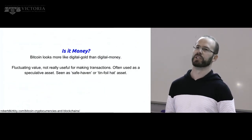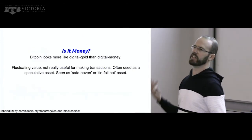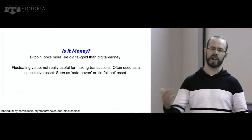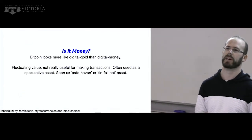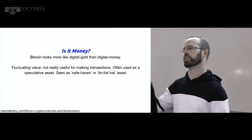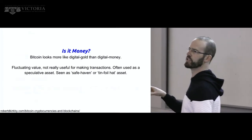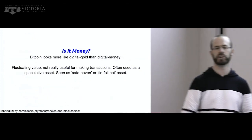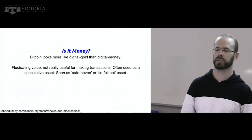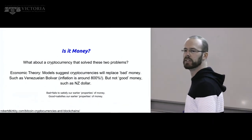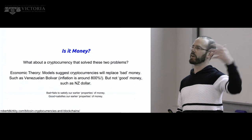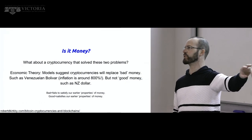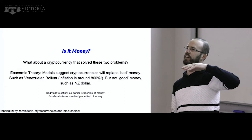So Bitcoin is not very good as money — it's not a store of value and not a useful medium of exchange. It looks more like digital gold than digital money. You can transfer in and out of it, but it's not hugely useful for making transactions, and its value goes up and down quite a bit. It's often used for speculative purposes and is sometimes seen as a safe asset — the same way people say 'buy gold' if things are going badly in the world.